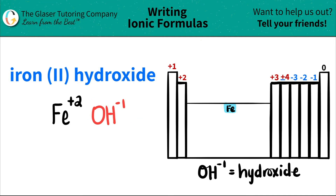Now, since we have both components, we do a little trick where we crisscross the charges to determine the subscripts — the little numbers. So this plus 2 crisscrosses down, telling me that I have 2 of the hydroxides. And then this negative 1 crisscrosses down, telling me that I only need 1 iron. When you do this crisscross trick, don't worry about the charges anymore — they kind of vanish, and you're just looking at the bottom numbers.